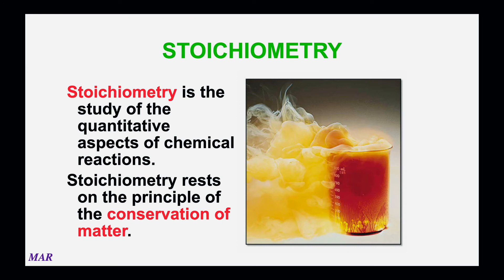Stoichiometry is the study of quantitative aspects of chemical reactions. Quantitative means quantity — you're measuring out different reactants to make the right combinations. Stoichiometry is the science of how much to add and how much you're going to get out. It has its foundations on the conservation of matter or law of mass action: you have to know what goes in, you have to know what comes out, and everything has to be balanced.